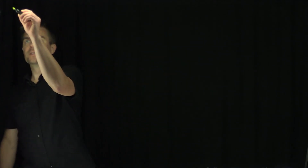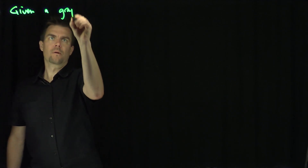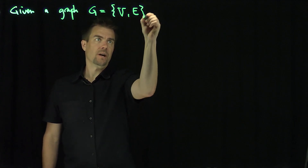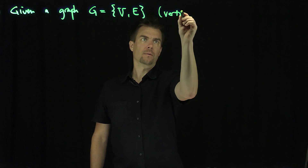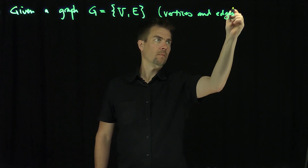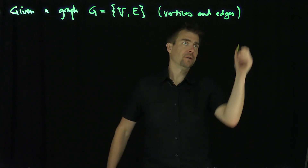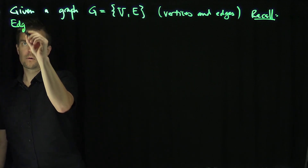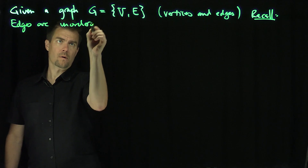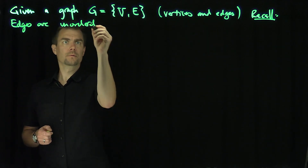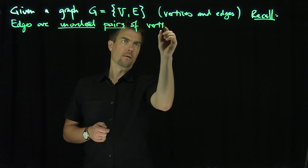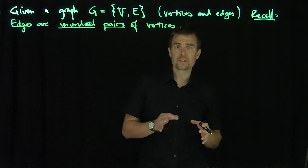Hello students. In this video, we'll discuss the adjacency matrix that corresponds to a graph. Let's be given a graph G, which is a collection of vertices and a collection of edges. Edges are unordered pairs of vertices, and since they're pairs, this allows me to construct a matrix.